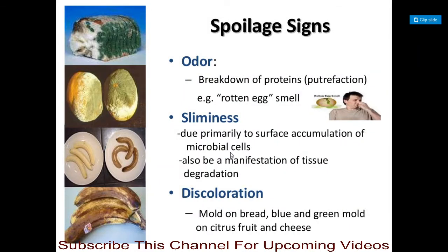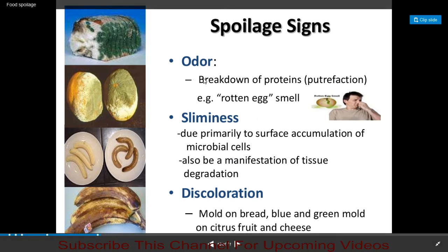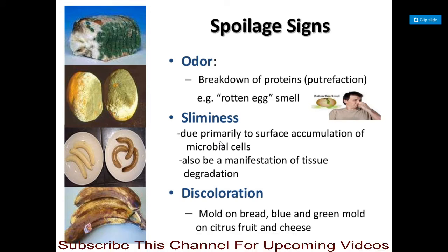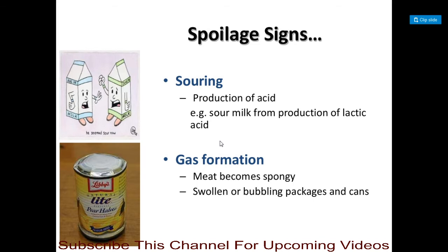Signs of spoilage include: odor — for example, breakdown of proteins through putrefaction producing a rotten egg smell; sliminess due to surface accumulation of microbial cells and tissue degradation; discoloration — such as blue and green molds growing on bread or citrus and cheese; souring due to production of acid, for example sour milk from lactic acid production; and gas formation causing meat to become spongy or packages and cans to swell or bubble.